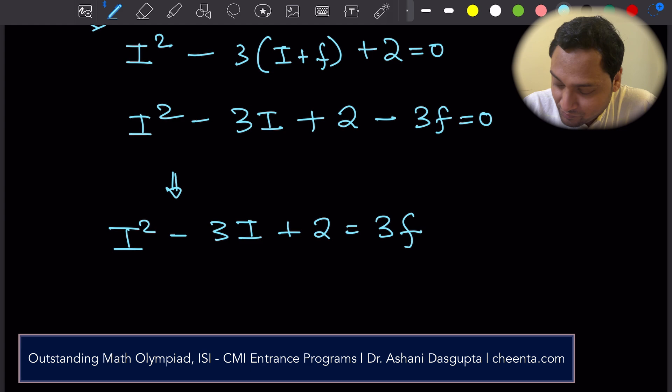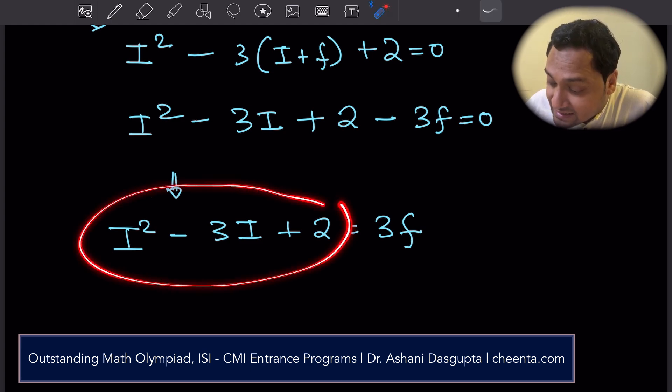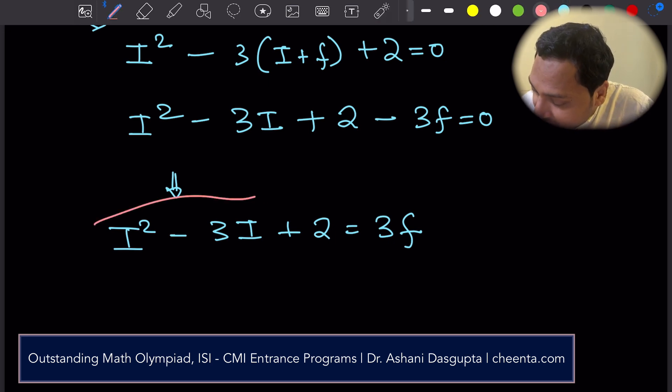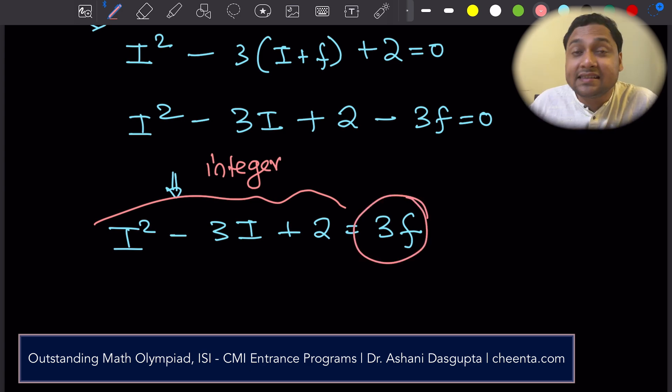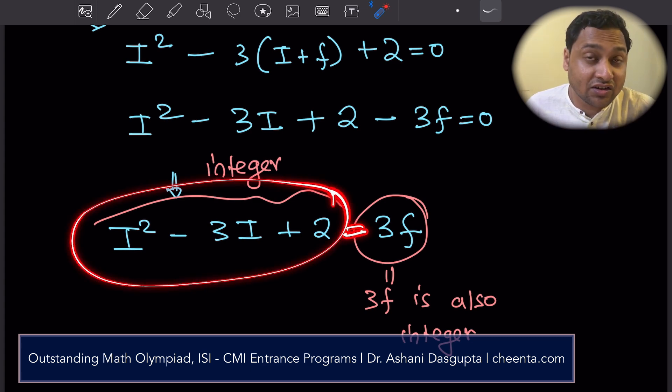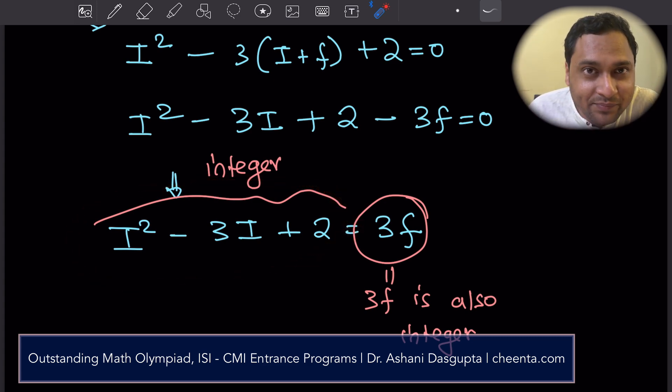Now comes the analysis part. Notice that the left hand side is an integer because i square is an integer minus 3i is an integer and 2 is an integer. So if you add and subtract things which are integer, they're integer. So the left hand part is integer. The right hand part, however, can be also a fraction. So we must ensure that 3f is also integer. 3f must be integer in order to be equal to the left hand side which is an integer. An integer cannot be equal to a non-integer, right? This is the clever part.